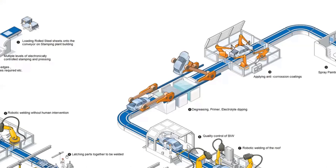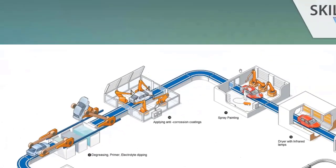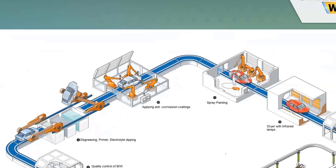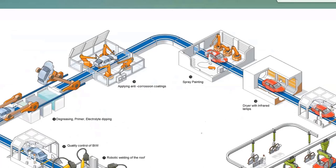In the paint shop, the body is continuously dipped through three different tanks. First, degreasing removes all dirt, welding residue, etc. Then there is primer application, and electrolyte dipping which helps with anti-corrosion coating. After these three dips, anti-corrosion coating is applied to prevent rusting. Then it moves to spray painting — both robotic and manual spray painting happen on the car body — and after this it goes into the dryer with infrared lamps.